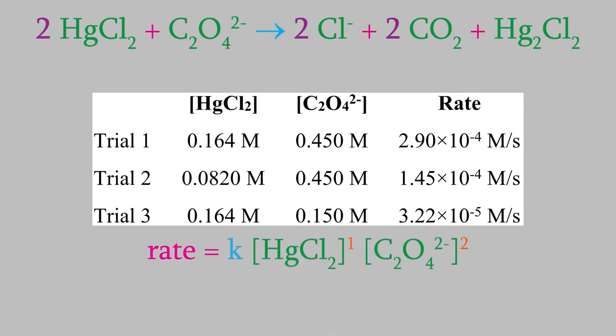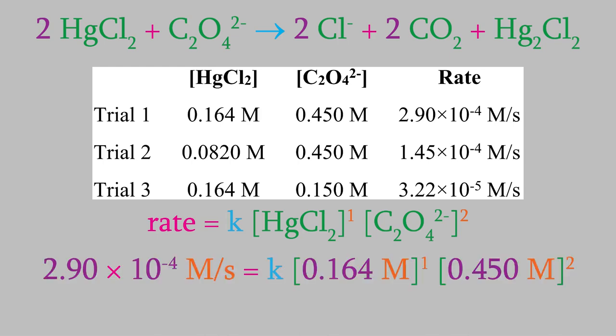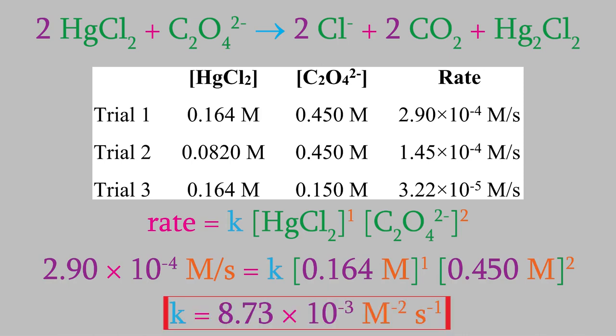Now that we know the rate law, we can also determine the value of k, the rate law constant. Just as in our earlier example, we use the data from one of our trials. We can choose any of the three trials because they'll all give us the same result for k. I'll use the data from trial 1. When we plug in the rate and the values for the concentrations, we can solve for k and get 8.73 times 10 to the minus 3, with units of molarity to the minus 2 times seconds to the minus 1. Be careful when you calculate the units for k — they won't always be the same for every reaction.